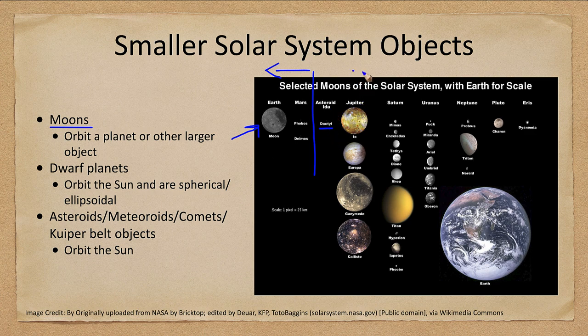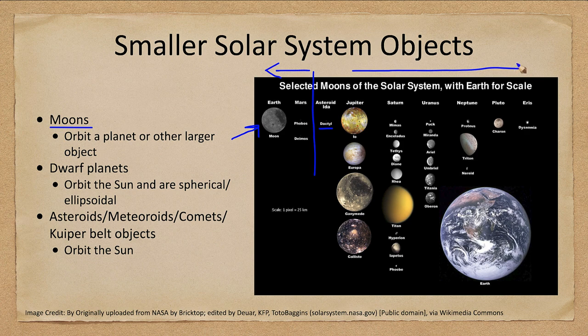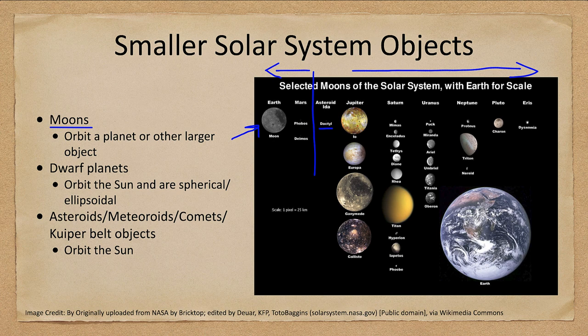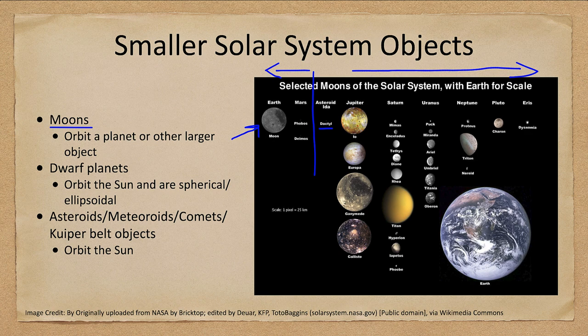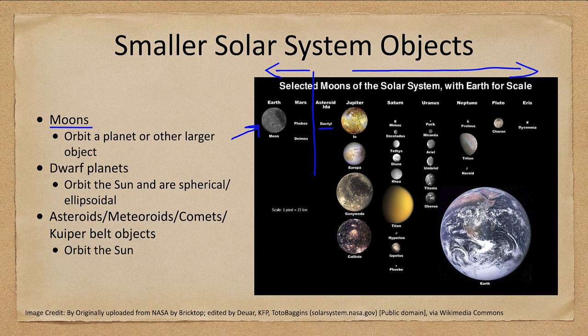And then we see lots of moons in the outer solar system. We picture Earth here just to give you a sense of scale. You can take all of these moons and you really don't even make one Earth. So while there are a lot of them and some of them are fascinating that we will look at, they are not really a big part of the mass of the solar system.